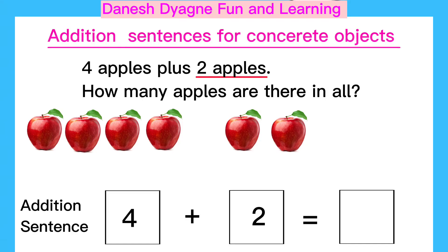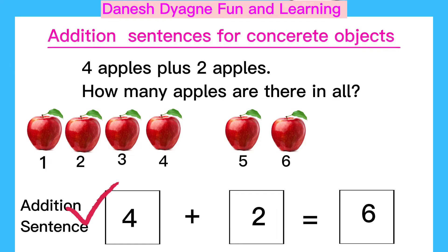Let's count the total number of apples. One, two, three, four, five, six. The total number of apples are six. So the addition sentence is four plus two equals six.